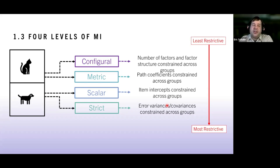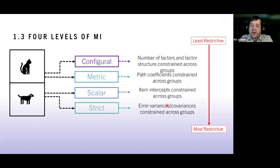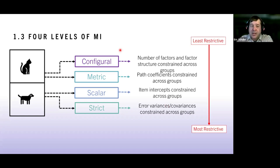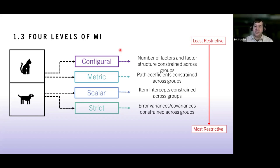That's the rough idea of measurement invariance — looking at differences that might lead individuals to answer in different ways. We start with a weak form of invariance and progressively add stricter constraints. When we talk about constraining groups, we're setting parameters — whether it's factor loadings (the path between construct and observed variable), then intercepts, then variances — to be equal across groups, going from least to most restrictive.